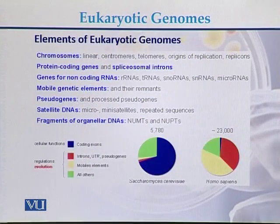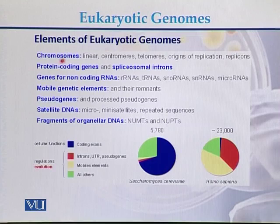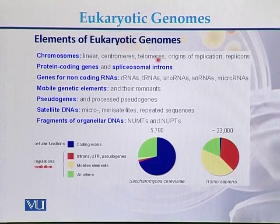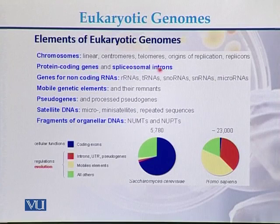This covers the elements of the eukaryotic genome present in different eukaryotic genomes. In eukaryotic genomes, chromosomes are linear. There is a centromere in the middle of the chromosomes and telomeres at the ends. Chromosomes also contain origins of replication and replicons. Eukaryotic genomes include protein-coding genes and spliceosomal introns.